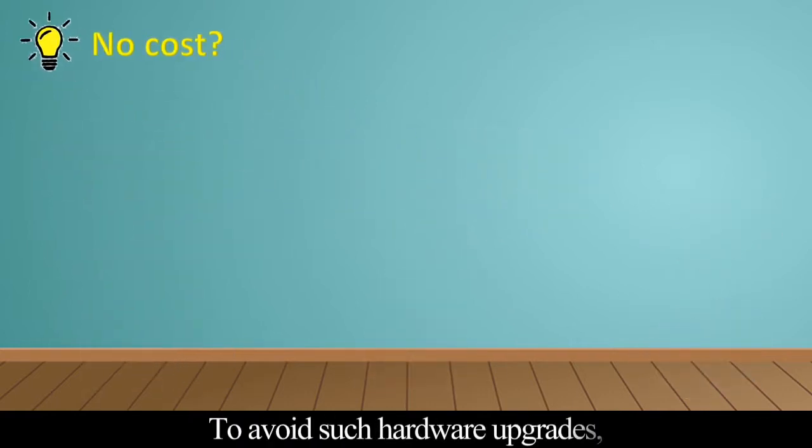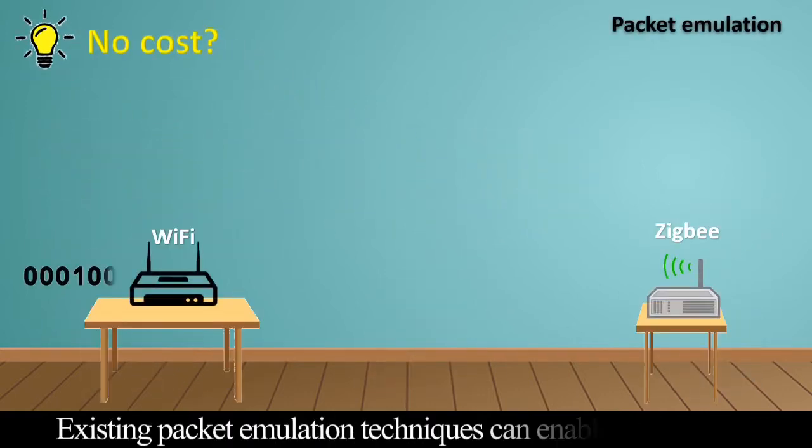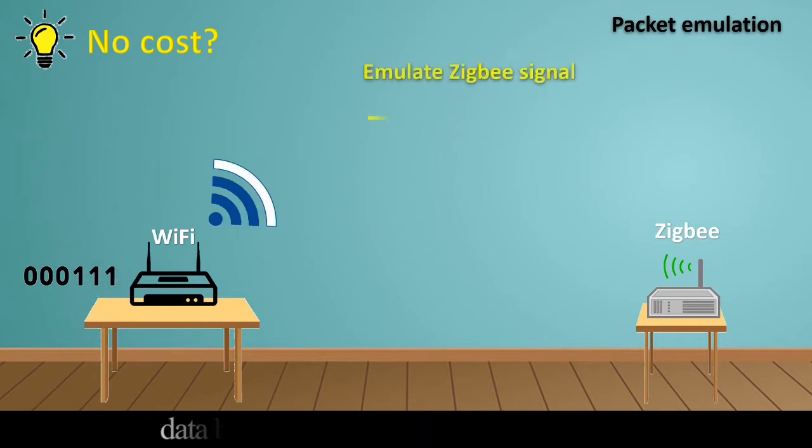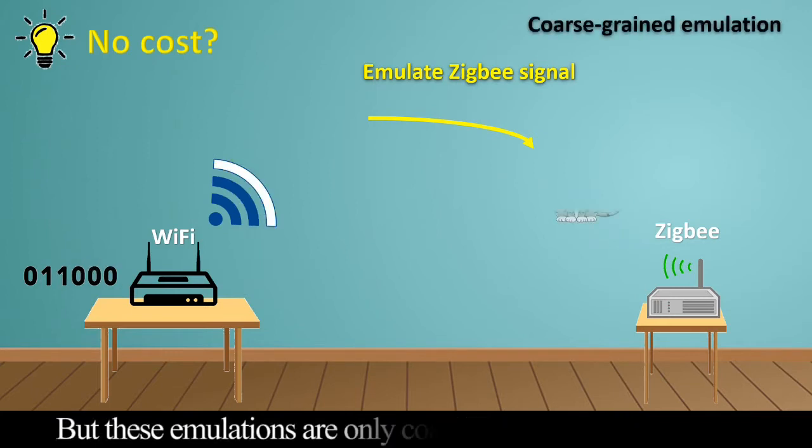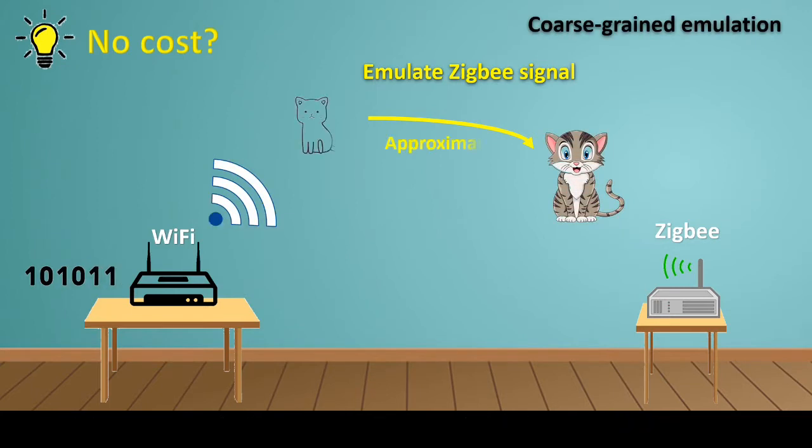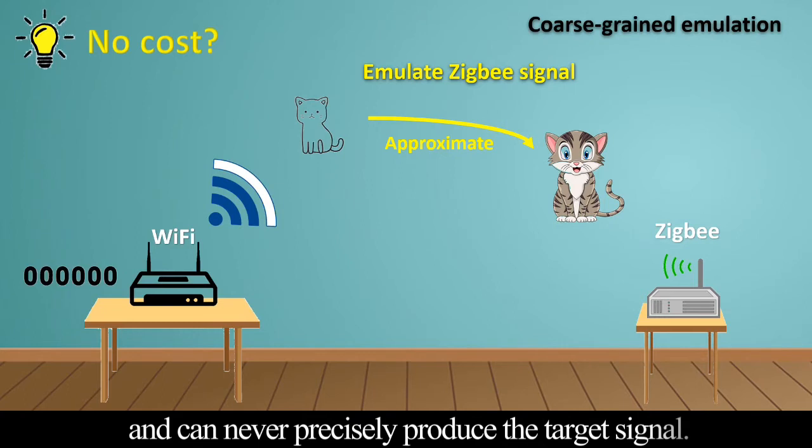To avoid such hardware upgrades, existing packet emulation techniques can enable transmitting data between incompatible wireless PHYs, such as Wi-Fi and Zigbee. But these emulations are only coarse-grained approximations and can never precisely produce the target signal.